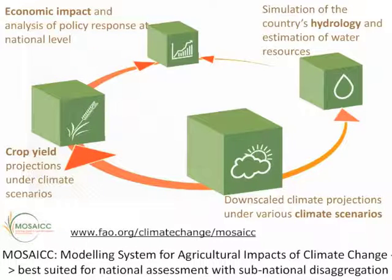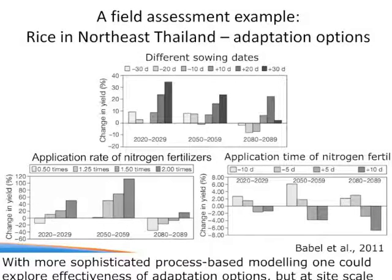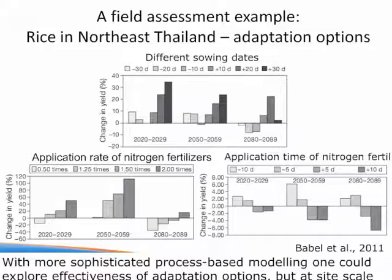This assessment was carried out by FAO, called the Mosaic Modeling System for Agricultural Impacts of Climate Change, which is designed for national-scale assessment at sub-national disaggregation. Lastly, this is an example of field-scale assessment in Thailand, which looked at the effectiveness of different adaptation options — like changing sowing dates, fertilizer application amounts, and timing of fertilizer applications — and how those impact rice yields positively or negatively.